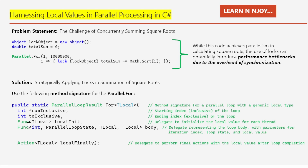To achieve this optimization we can utilize this method signature: public static ParallelLoopResult For<TLocal>(int fromInclusive, int toExclusive, Func<TLocal> localInit, Func<int, ParallelLoopState, TLocal, TLocal> body, Action<TLocal> localFinally). Just like each volunteer having their own trash can, TLocal allows each worker thread to maintain its own local value.